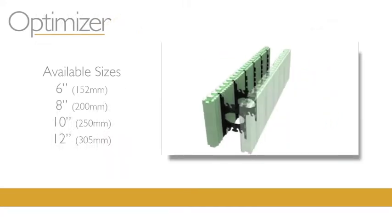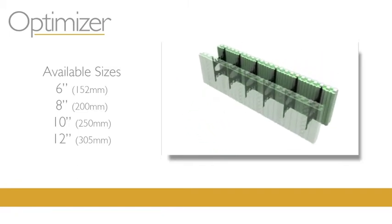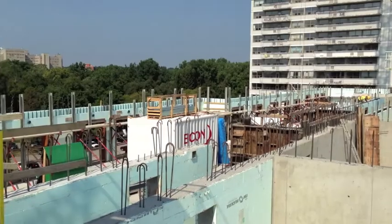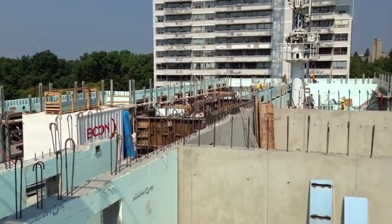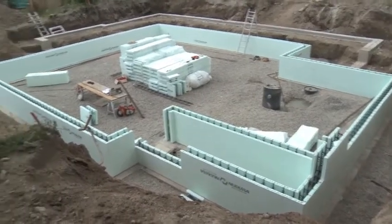The Optimizer is available in Nidura's standard core sizes of 6 inch or 152 millimeters to 12 inch or 305 millimeters, giving users the freedom to use the Optimizer on any size job from commercial to residential.